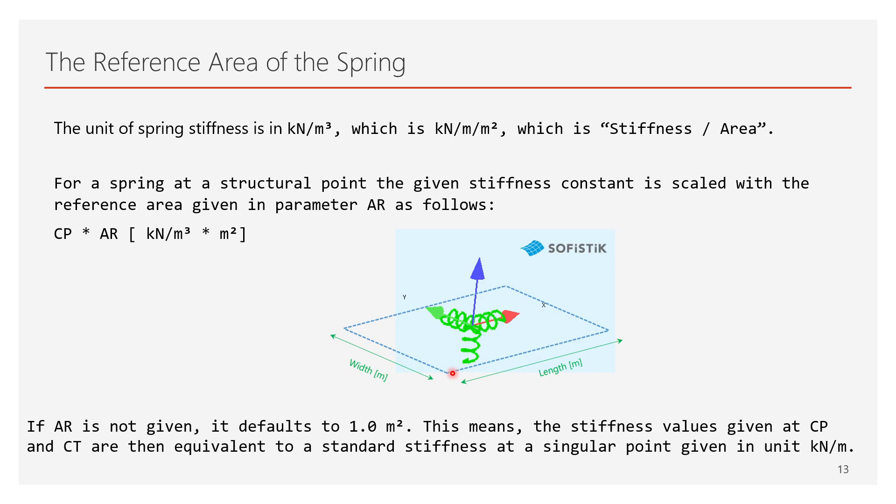If AR is not given, it defaults to one meter square. This means the stiffness values given at Cp and Ct are then equivalent to a standard stiffness at a singular point given in unit kN per meter.